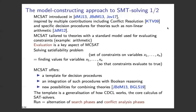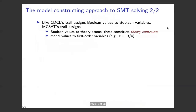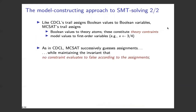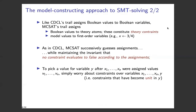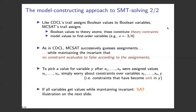Just like CDCL has a trail that assigns Boolean values to Boolean variables, MCSAT has a trail that assigns Boolean values to theory atoms — these constitute theory constraints that have to be satisfied — and assigns model values to first-order variables, such as assigning the value three-quarter to x. MCSAT successively guesses assignments, and it maintains the invariant that no constraint evaluates to false according to the current assignments. That means that to pick a value for variable y after having picked values for x1, x2, ..., xn, you only need to worry about constraints over those variables and y — we call them unit in y. If all variables get values while this invariant is maintained, then your initial problem is satisfiable.